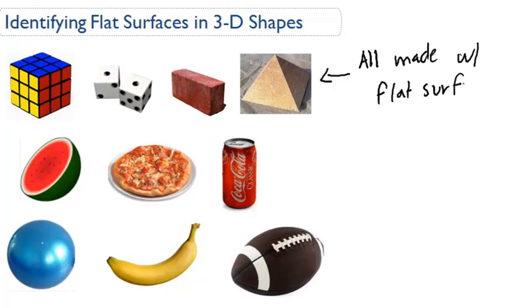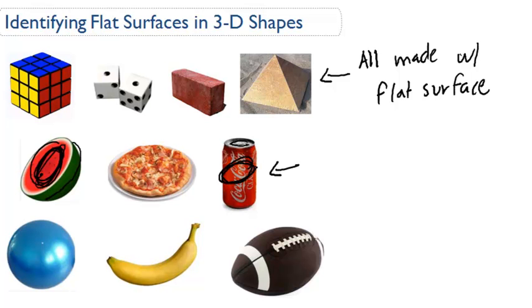Then you have some objects that have some flat surfaces and some curved surfaces. For example, a watermelon — this little face right here is flat, but this bottom part is curved. Same thing goes for the soda can: the face around the edge is curved, but the top of the can and the bottom of the can are flat. So some flat surfaces for these objects.